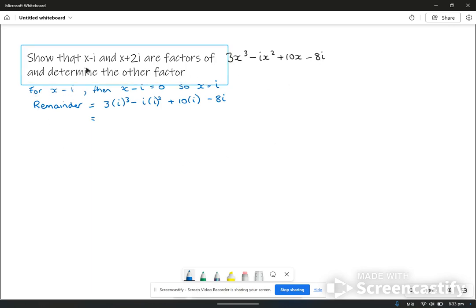For x minus i, if we make x minus i equal to zero, just like you would for the factor theorem, then x equals i. So we want to find the remainder when x equals i, so we put i into the expression using x is i.